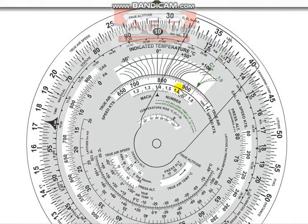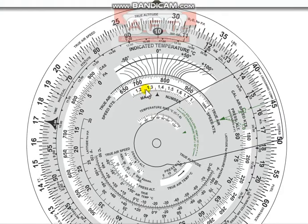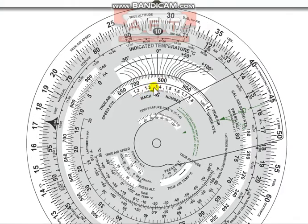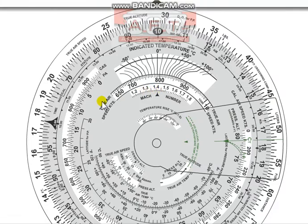We're going to look at the relationship between Mach number, CAS, and flight level using the CR3. We've got CAS and PA in this window — calibrated airspeed over pressure altitude or flight level. Mach is displayed on the Mach number index on the Mach scale, and the only variable needed to convert CAS to Mach is pressure altitude. To figure out my Mach from my CAS, I only need to know my PA.